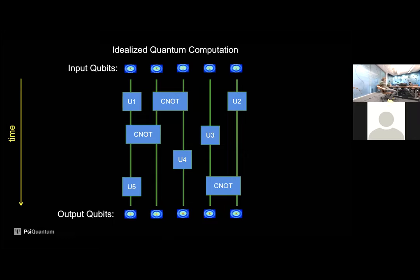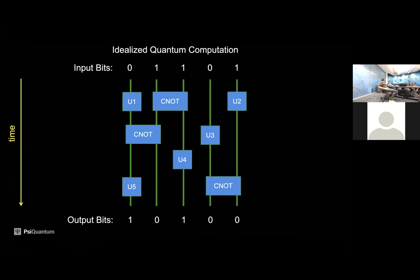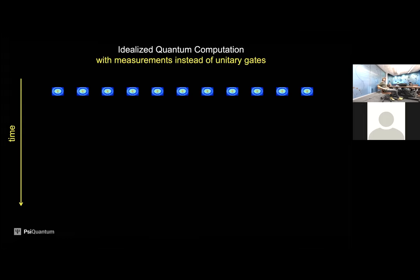Idealized quantum computation is normally described as a close analog to classical. Now my inputs are quantum bits or qubits, and you have gates between the qubits that are also deterministic. If you think about the evolution in the Hilbert space, it's actually a nice, smooth, continuous evolution — the quantum state just evolves continuously. But at the end of the day, you need classical information at the output, so you make some kind of measurement.